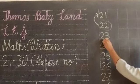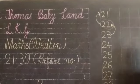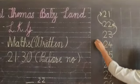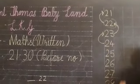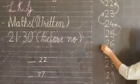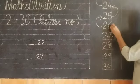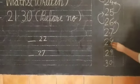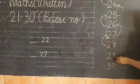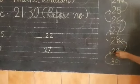Which number is this? 23. 23, before is 22. Which number is this? 24. 24, before is 23. 25, before is 24. 26, before is 25. 27, before is 26. 28, before is 27. 29, before is 28. And 30, before is 29.